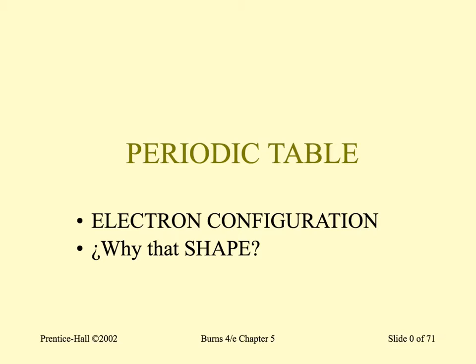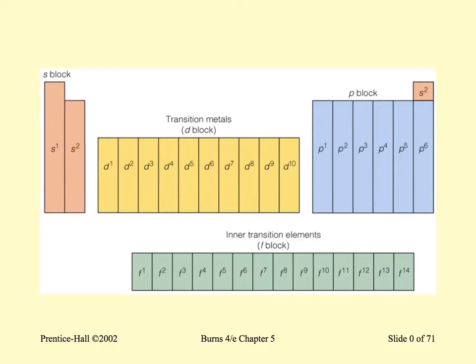At this point you must know that the periodic table is anything but random. Every column, every period, every specific box, every location has a reason. Have you ever wondered why the periodic table has the shape it has? The shape of the periodic table belongs to the electron configuration.